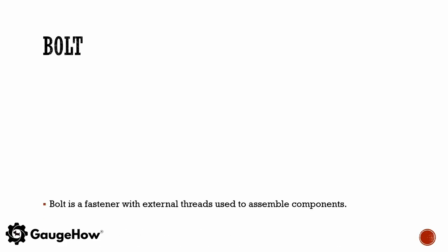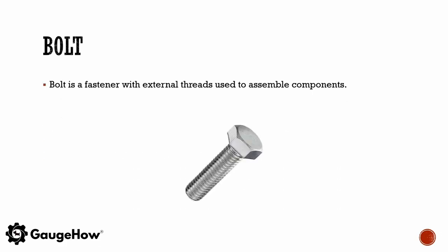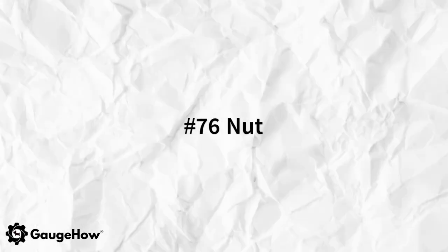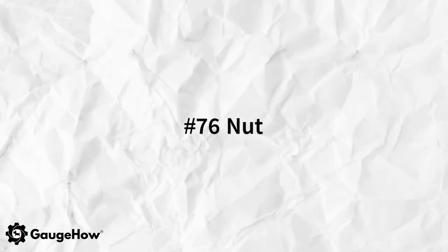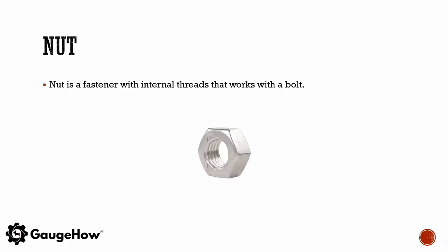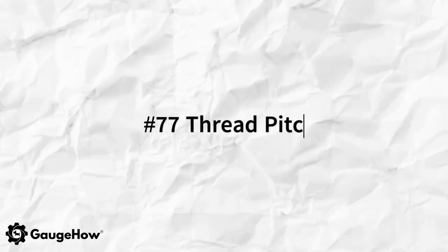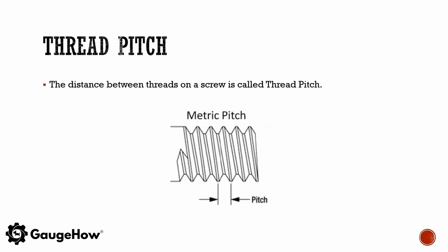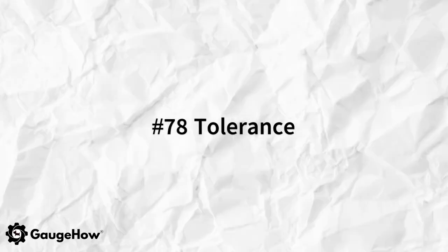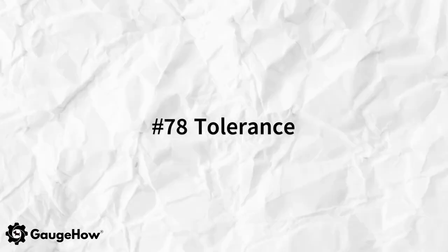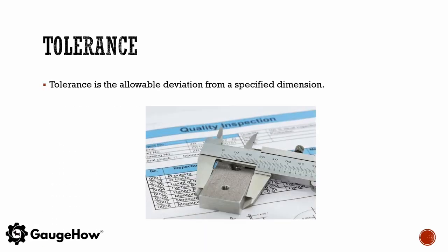A bolt is a fastener with external threads used to assemble components. A nut is a fastener with internal threads that works with a bolt. The distance between threads on a screw is called thread pitch. Tolerance is the allowable deviation from a specified dimension.